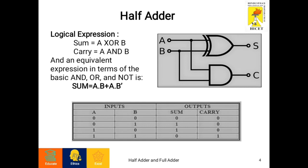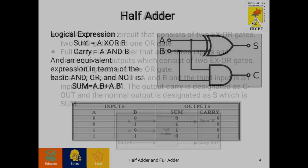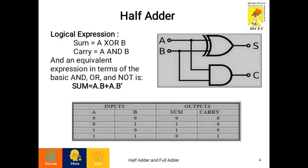Now let's see the truth table. The inputs are A and B and the outputs are sum and carry. The possible conditions for inputs are 00, 01, 10, and 11. For the 00 condition, the sum will be 0 and the carry will also be 0.